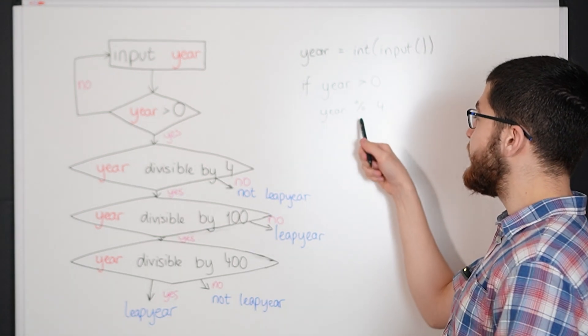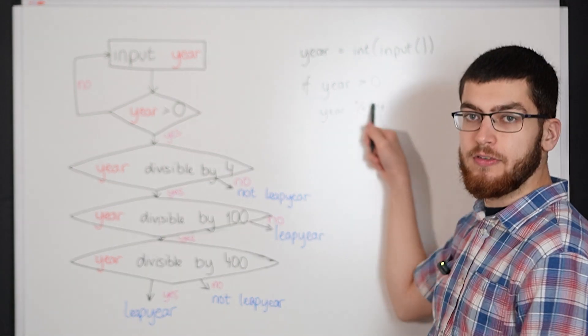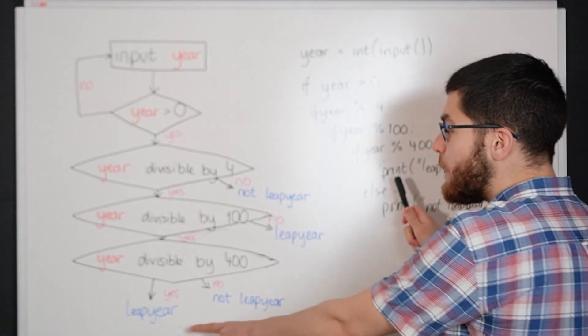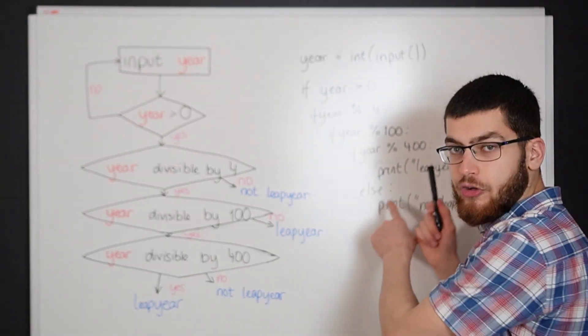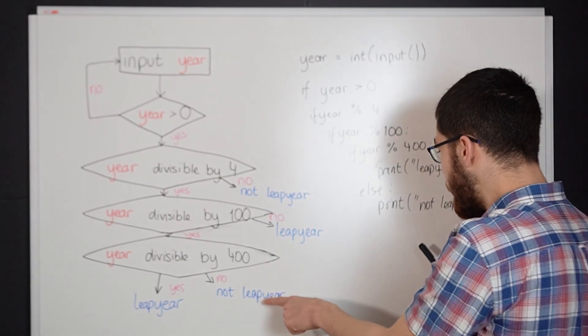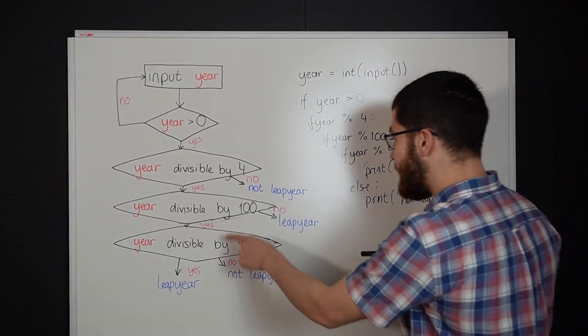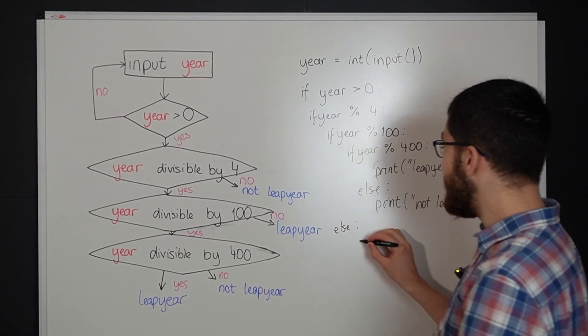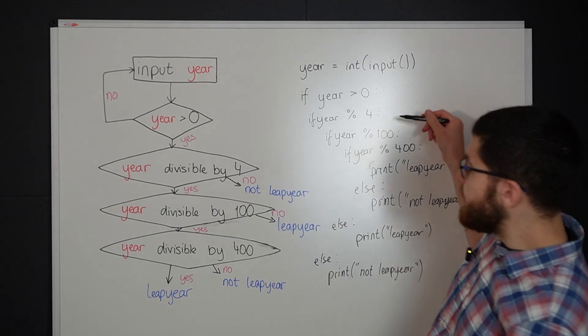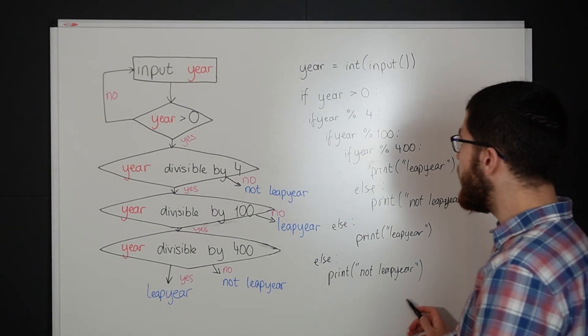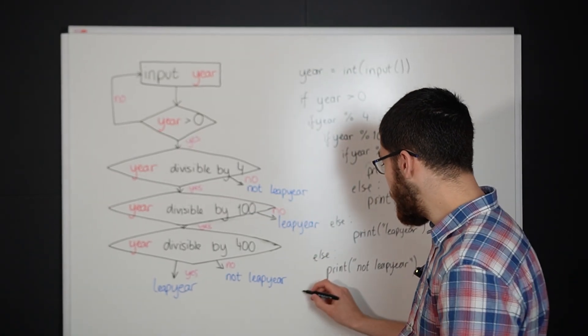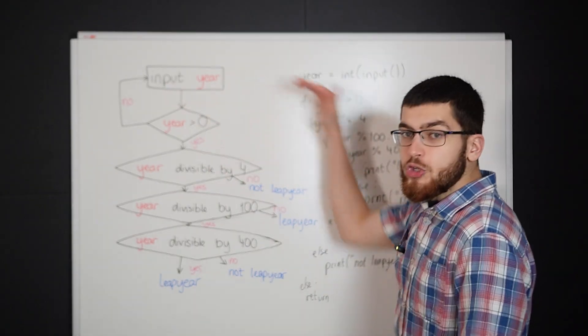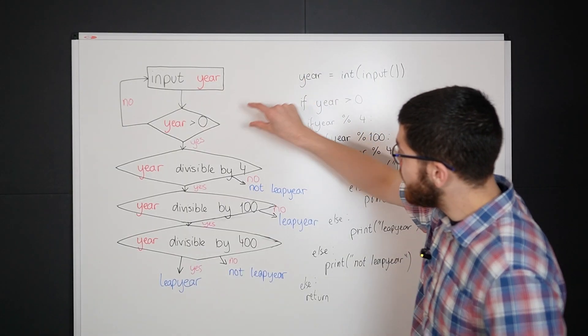Year greater than zero becomes if year greater than zero, year divisible by four becomes year percent sign four (this is the modular symbol), year divisible by a hundred and year divisible by four hundred becomes these, then you would print leap year if all of them are true. And then else if the last one is not true then it's not a leap year. If this one is not true, this four, this one hundred, then the answer is it is a leap year, and if it's not divisible by four then print not leap year. And if it's not even greater than zero then you can do else return and that'll just return nothing. So you can literally just go line by line translating each of the elements of the flowchart into python code and there you go, you're now a software developer.